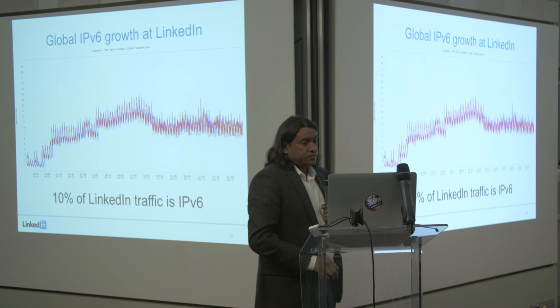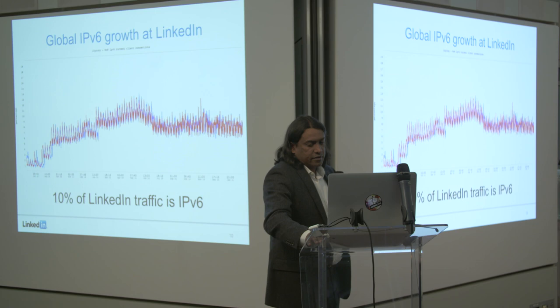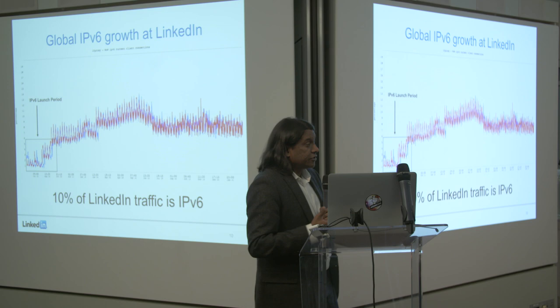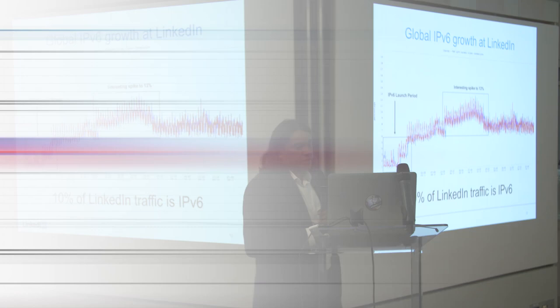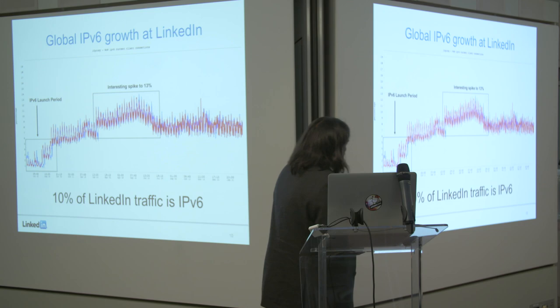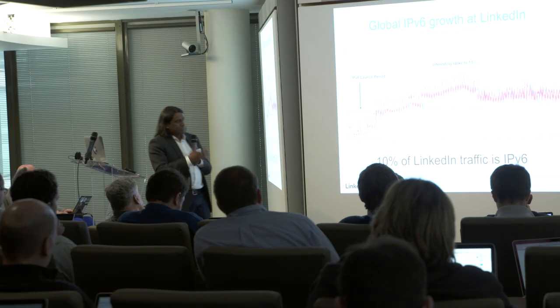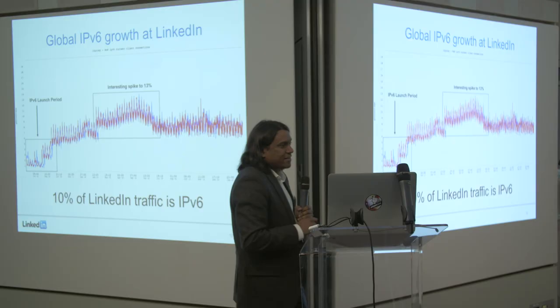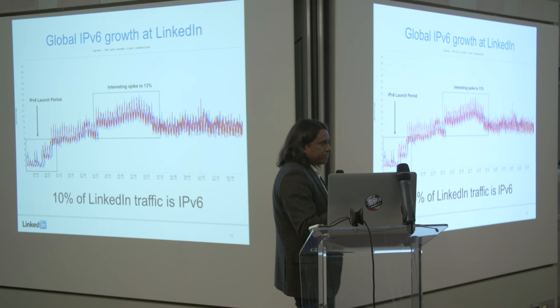I want to talk about growth. Last time I came, we had launched — around September 2014 — we were about 3% to 4% when we launched v6, and it's been an interesting journey. We've seen a lot of growth. Around April or May of last year, we saw an interesting spike to 13-14%, getting close to 15%, but somewhere along the line it came back down to about 10%. We can confidently say we're at 10% right now. We don't really know why we hit that 13-14% mark. We theorize it could be because some large provider may have actually turned on v6 and then turned it off.